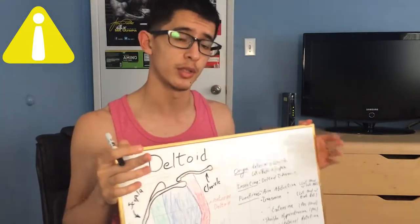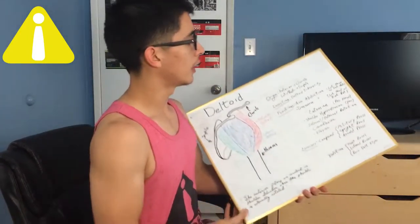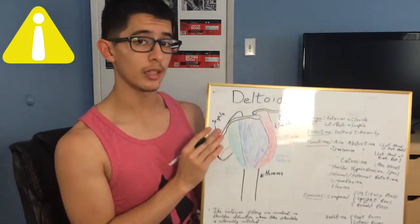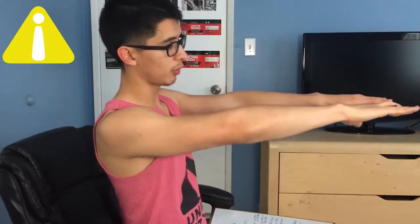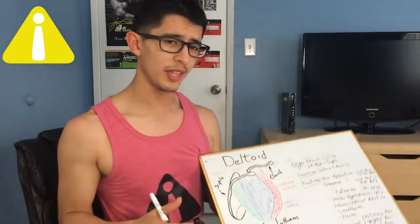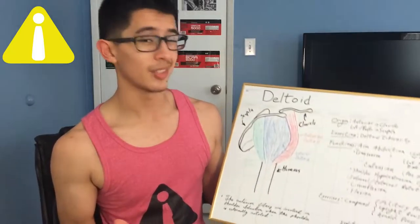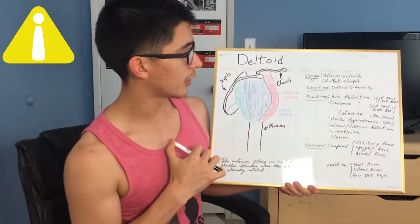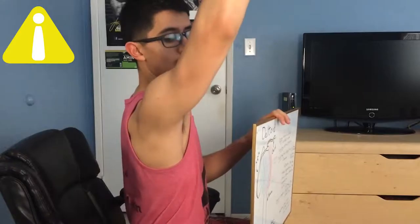Next we have transverse abduction, mostly done through the lateral head with external rotation. Transverse abduction is another word for horizontal abduction — pretty much this sort of movement. If you do it with your hands neutral you get good rear delt activation, but if you do more external rotation you get a lot more lateral head emphasis. The lateral head is not the only one doing transverse abduction — it is also a rear delt accessory movement.